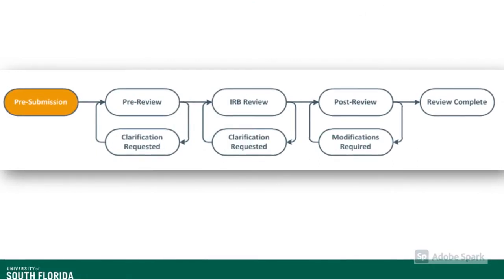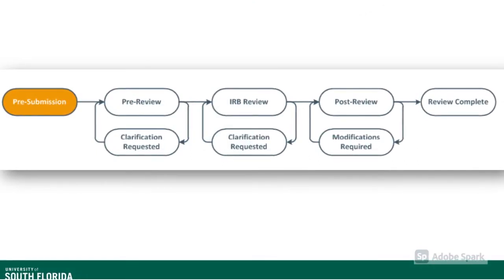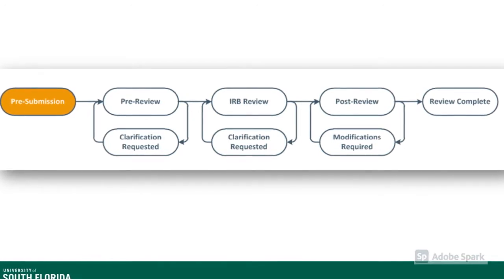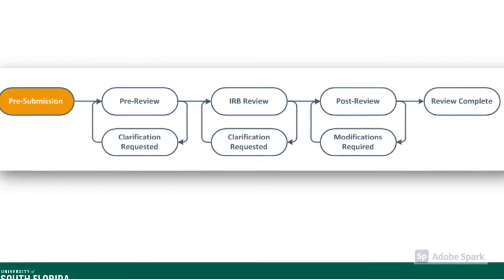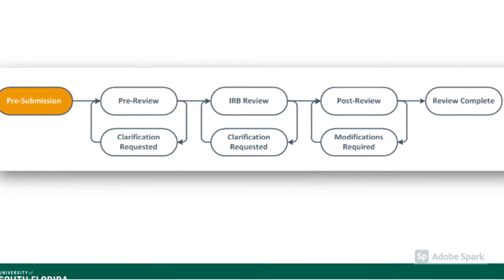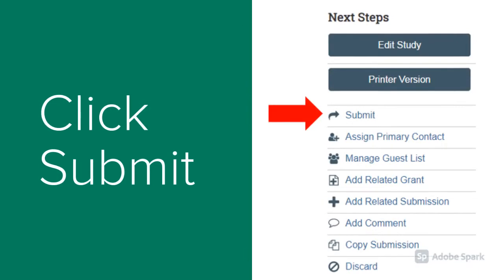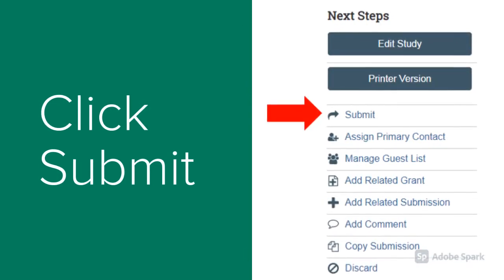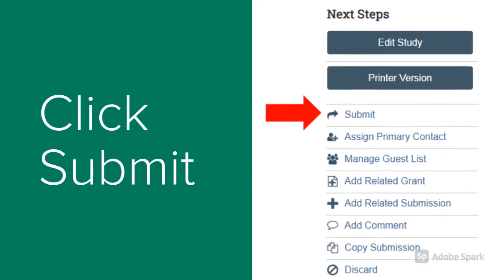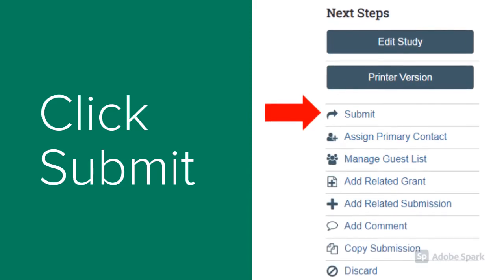In the pre-submission phase, the study is awaiting official submission. Typically, this means that the study team is currently preparing the study application for submission. This includes uploading the appropriate documents within the Bulls IRB system. When you are ready to submit the application, you'll hit the submit button on the study workspace under next steps.